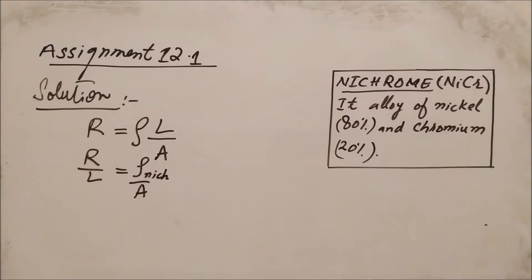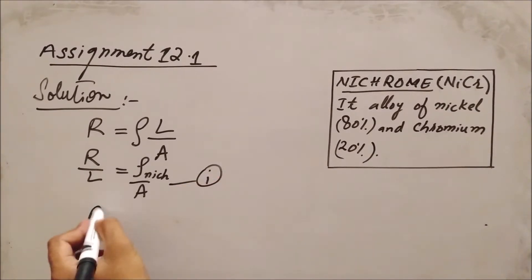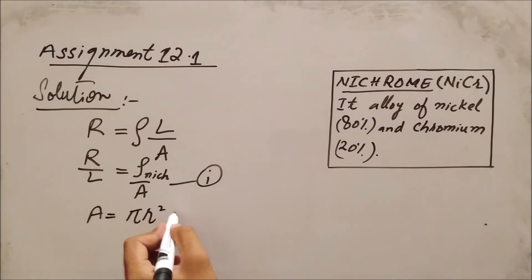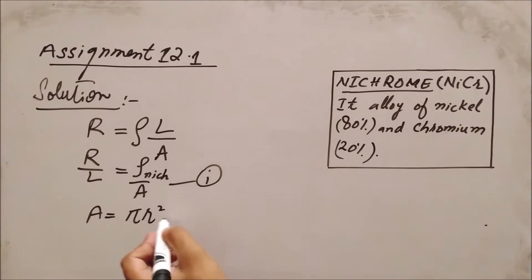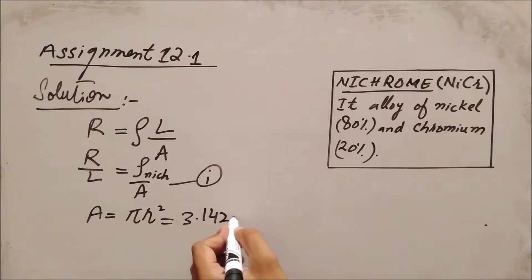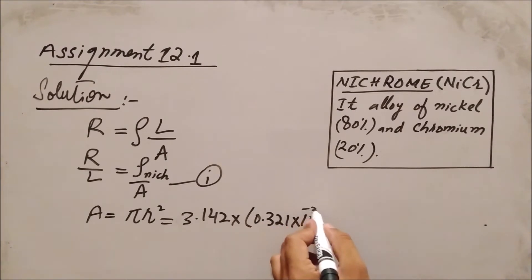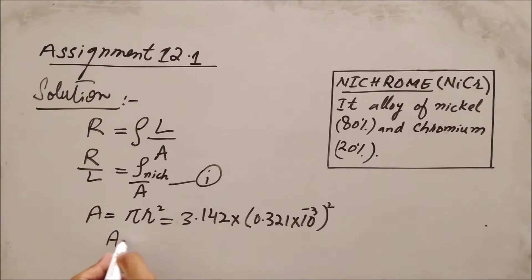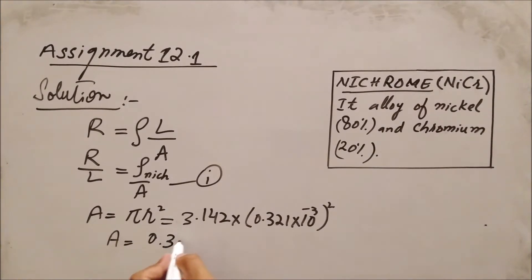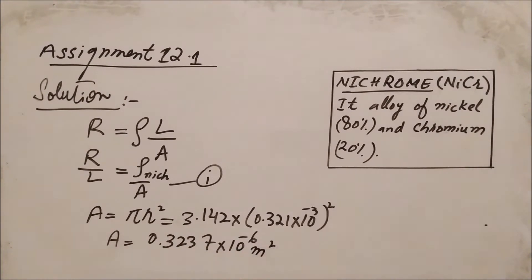Rho is the resistivity of the nichrome which is already given, but we need to find the area. To find the cross-sectional area, A equals pi R squared. The value of pi is 3.142 and the radius is 0.321 multiplied by 10 to the power minus 3, squared. By solving, A becomes equal to 0.3237×10⁻⁶ meter squared.